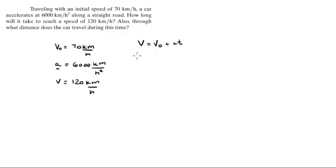We just replace the numbers. V is equal to 120, v0 is equal to 70, the acceleration is 6000, and t is what we are trying to find. When you solve for t, you get that t is equal to 0.00833 hours.